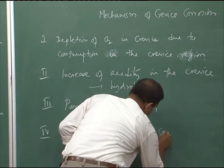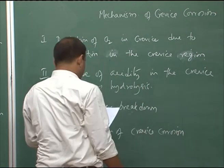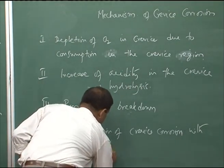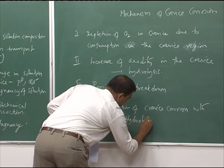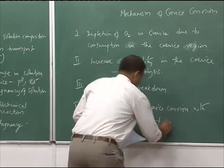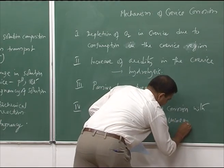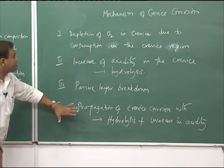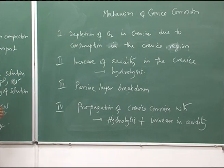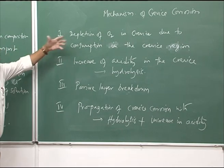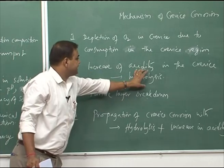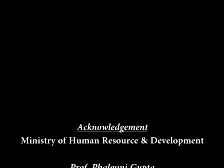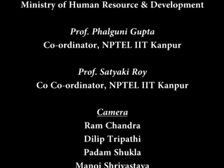The fourth stage is the propagation of crevice corrosion with further hydrolysis and increasing acidity. These are the four different stages of crevice corrosion. We will now see in detail the reactions at different stages — how the increase in acidity and hydrolysis-related phenomena lead to breakdown of the passive film.